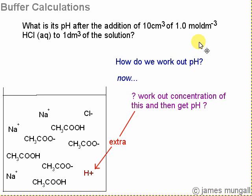Now we've added some HCl, so how do we work out the pH now? We've added some extra H plus, so perhaps we could work out the concentration of this H plus and then get the pH. But if we were to do that, the buffer wouldn't be doing its job at all. That would just be like adding H plus to water.